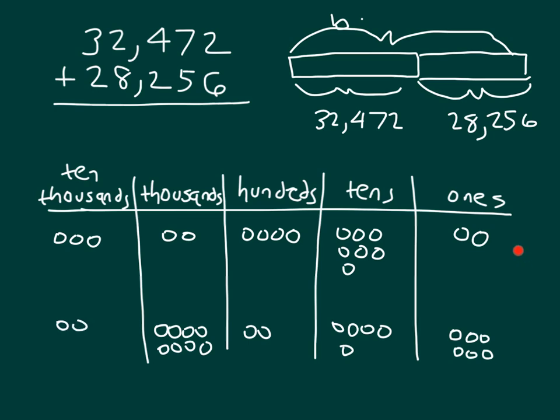We'll start our addition in the ones place, where we have two ones plus six ones, equaling eight ones. Next, we have seven tens plus five tens, equaling twelve tens. So we'll be left with two.